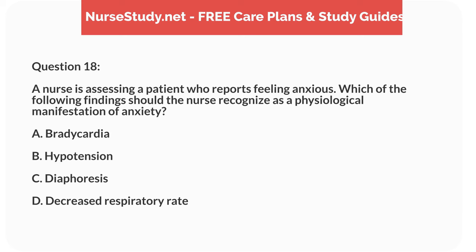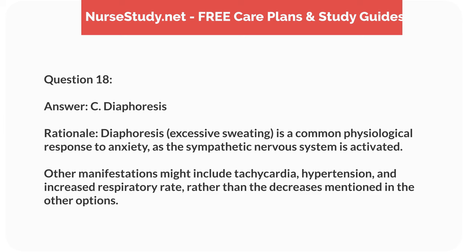Question 18. A nurse is assessing a patient who reports feeling anxious. Which of the following findings should the nurse recognize as a physiological manifestation of anxiety? A. Bradycardia. B. Hypotension. C. Diaphoresis. D. Decreased respiratory rate. Answer: C. Diaphoresis. Rationale: Diaphoresis (excessive sweating) is a common physiological response to anxiety as the sympathetic nervous system is activated. Other manifestations might include tachycardia, hypertension, and increased respiratory rate, rather than the decreases mentioned in the other options.